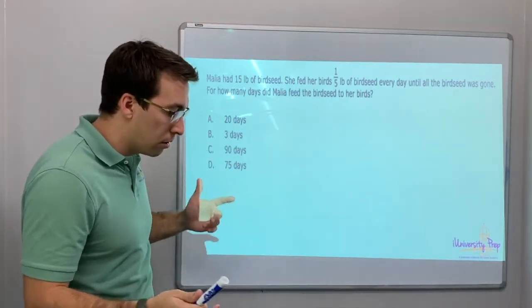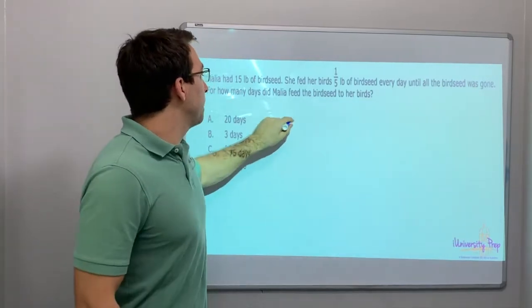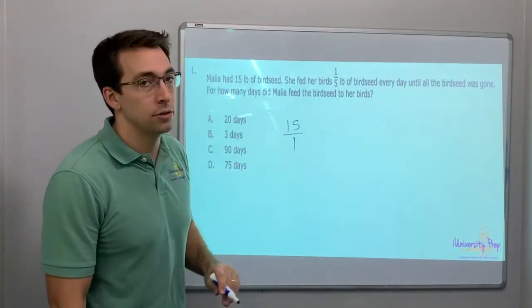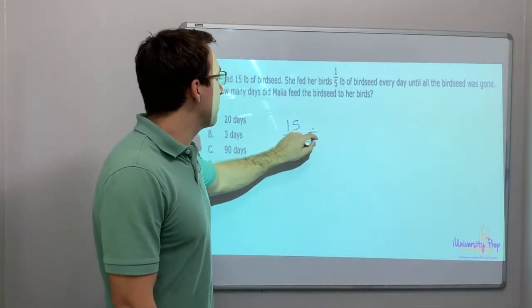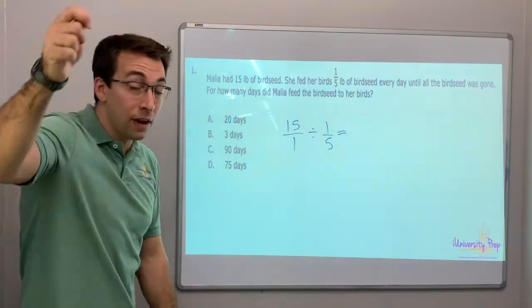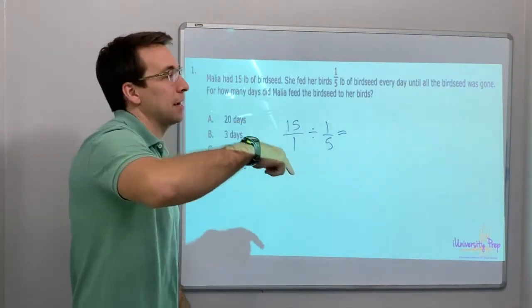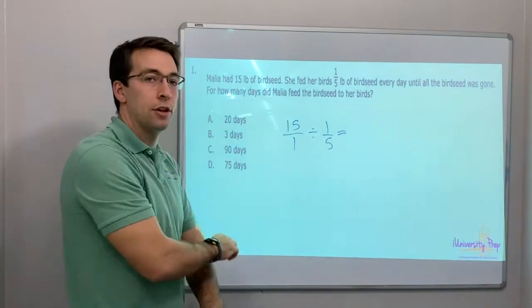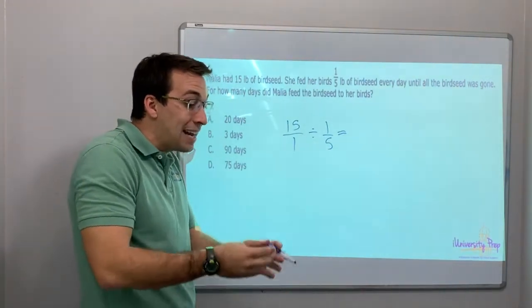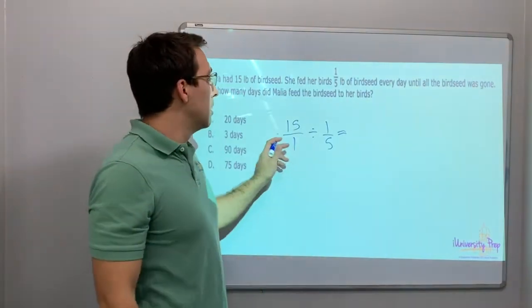Whoa. So, look, 15 over one, because there's 15 pounds, and we want to divide it by one-fifth. Now, what is funny is you want to multiply it, because you're like, oh, 15 times one? No, no, no. You have to divide it, because there's 15 pounds, and you're dividing each day as one-fifth.